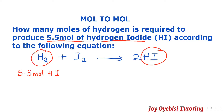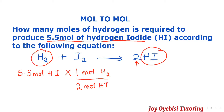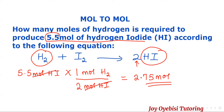Since the question is how many moles of hydrogen, we are going to write one mole of hydrogen on top, then divide by the moles of hydrogen iodide. You must always make sure these two moles are on opposite sides so they can cancel out. That would be 5.5 times one divided by two, and the final answer is 2.75 moles. Since 5.5 has two significant figures, your answer should be 2.8 moles approximately.